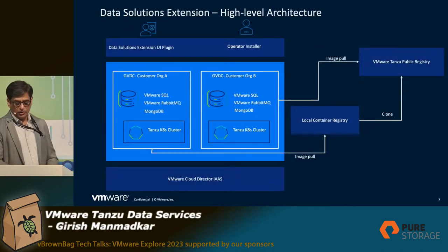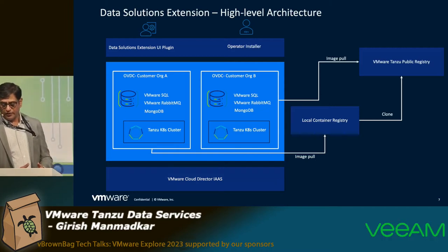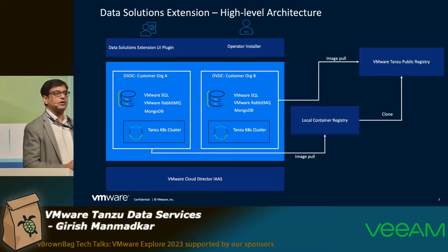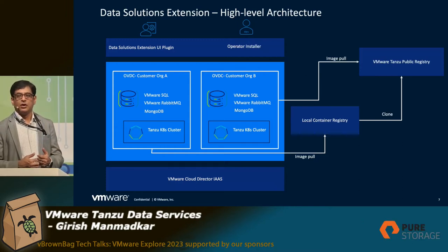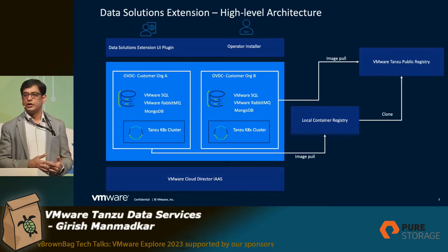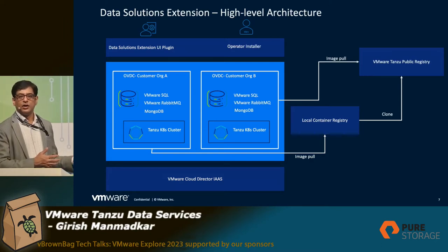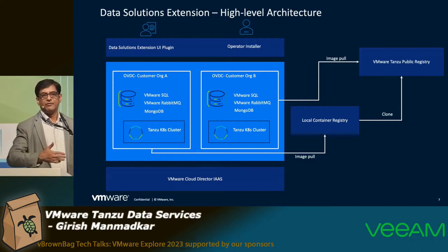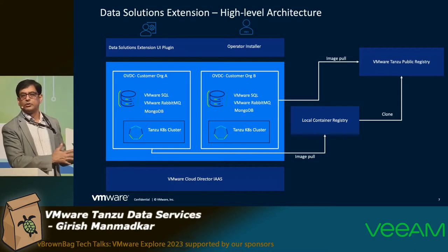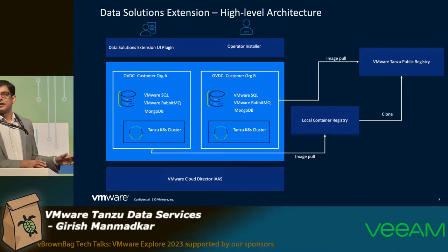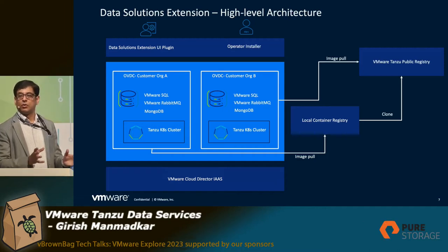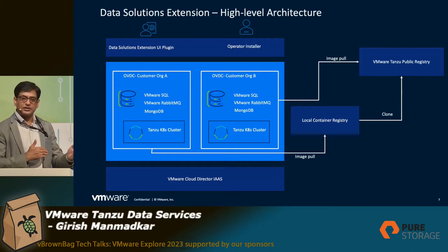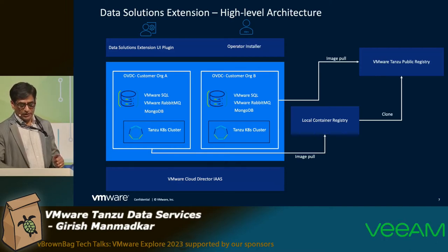For high-level architecture in the Kubernetes world, there is a public registry where things are available. Some customers want to pull directly from that registry, or some might want a local repository — pull once and have your own local registry available. In a sovereign cloud type of environment that is totally disconnected, you can download locally and upload to the tenant environment, so the tenant can have a local registry pulled away from the public library — total disconnectivity from a sovereign cloud perspective is achievable.